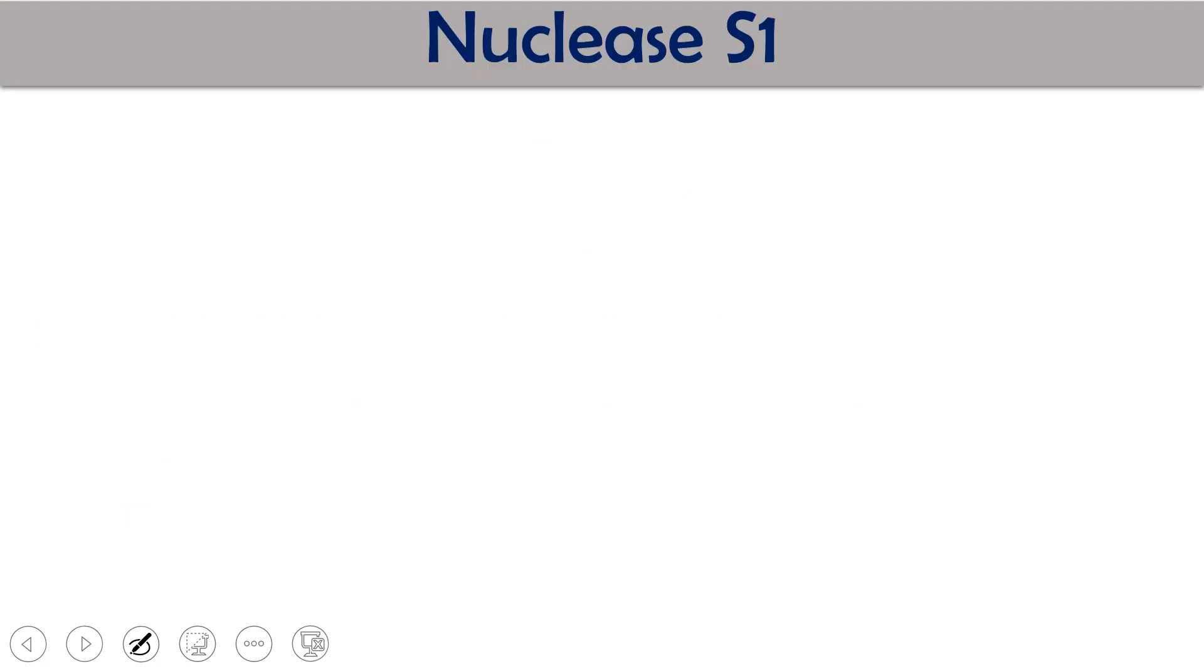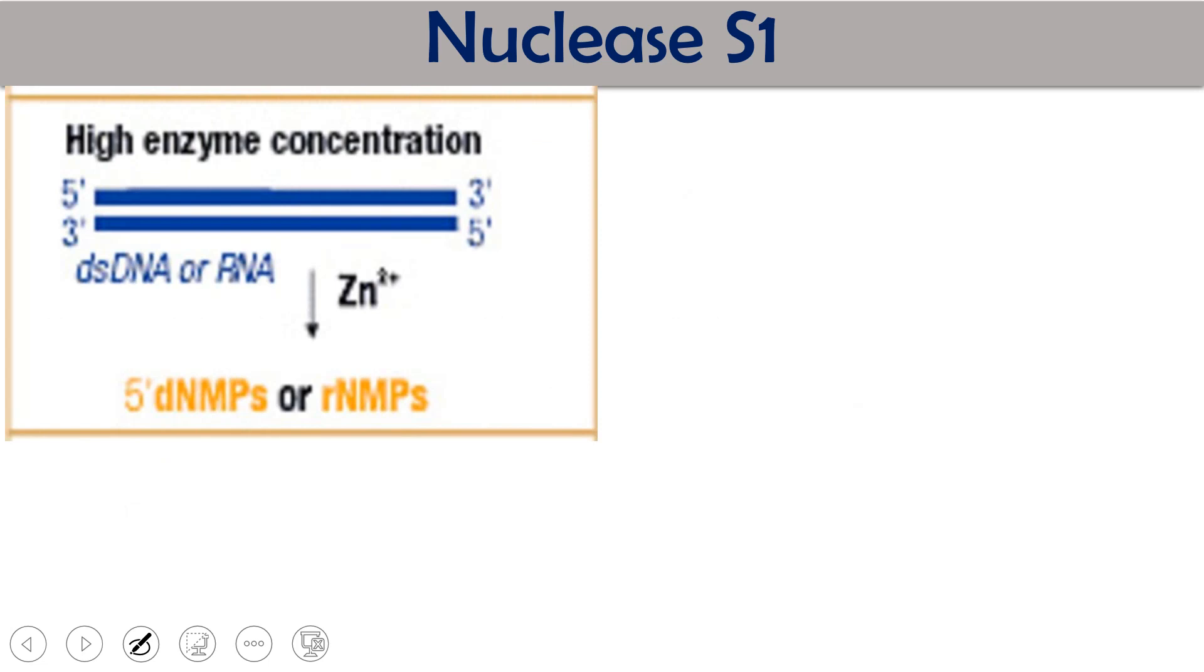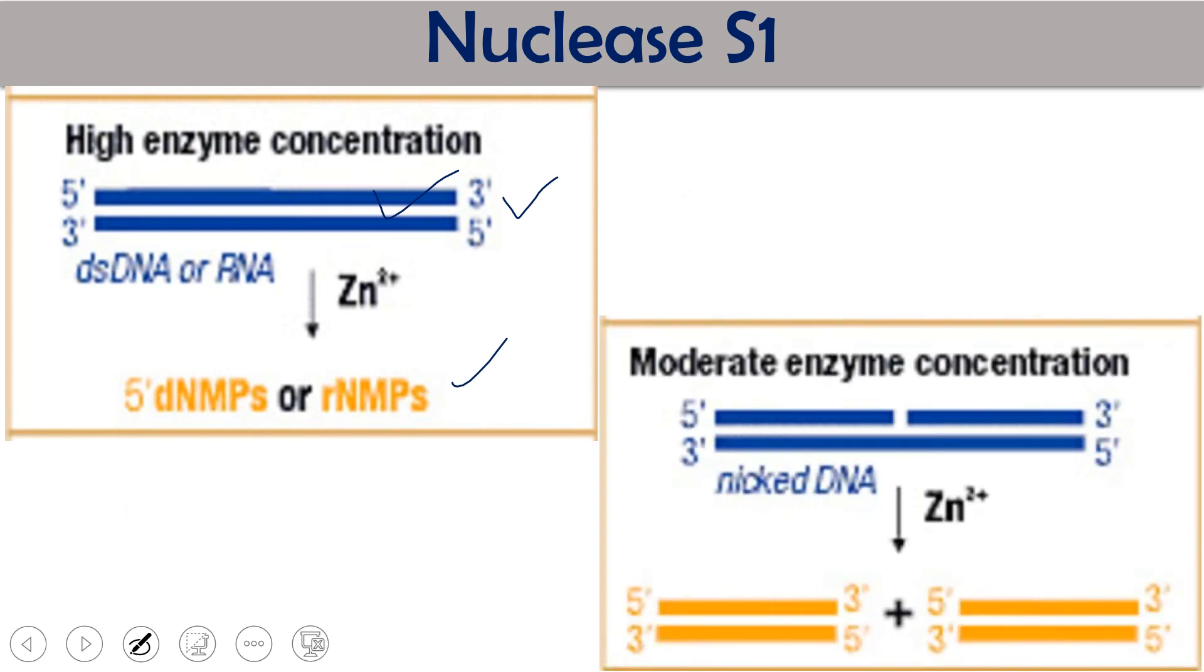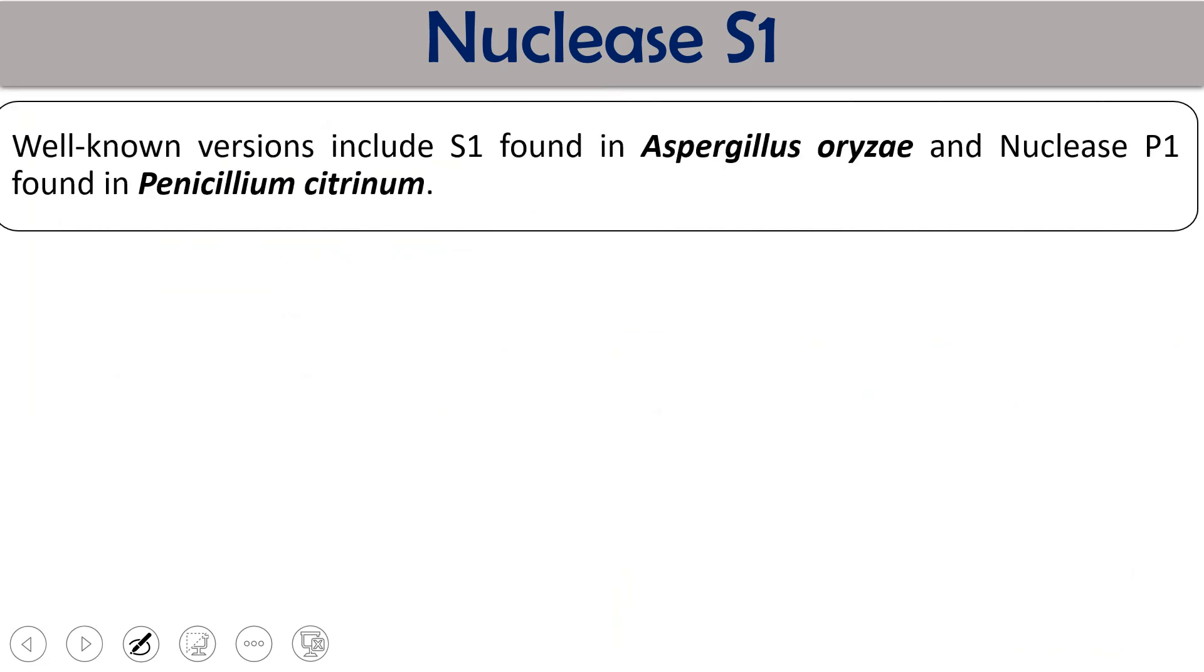This Nuclease S1 works in high concentration and low concentration with different types of activity. If you are having double-stranded DNA and high concentration of Nuclease S1 in the presence of zinc, blunt-ended DNA will be completely degraded and nucleotides will be produced. When this enzyme is in moderate or low concentration, it is not going to degrade the DNA completely, just going to degrade single strand where single-stranded region will be there.